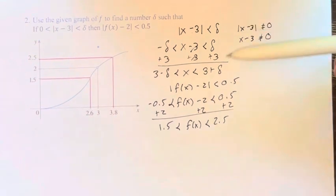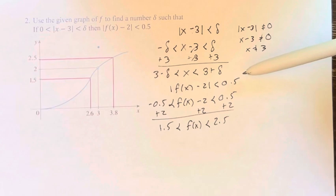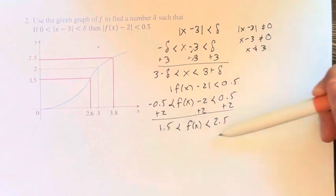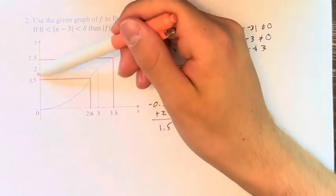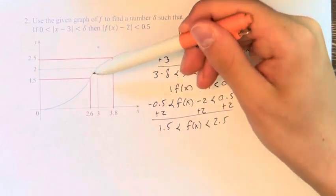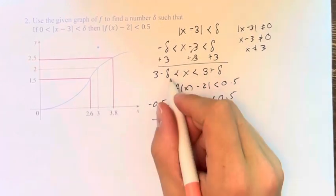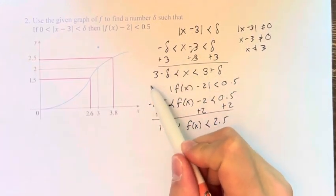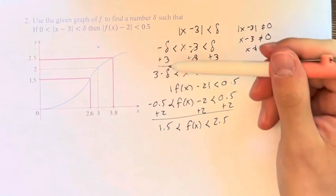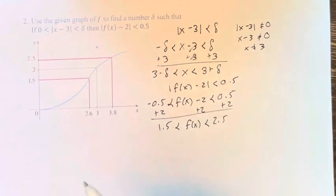So what we're doing is we're looking for a delta such that if we take away delta or add delta to 3, we are going to get out f of x values that are in this range. So we have this marked here on the graph. We're saying we need f of x to be between these two y values, right? So that corresponds to these two points. So we're looking at all the points in between here.